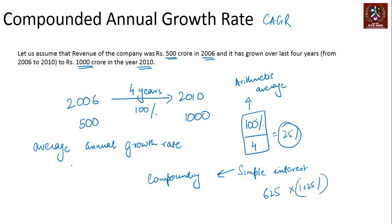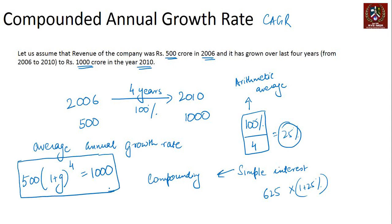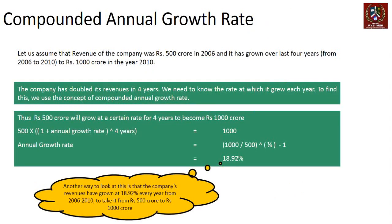What we need to identify is the growth rate at which 500 grows over four years and gives a future value of 1000. The equation we are solving is: 500 into (1 + g) raised to the power 4 equals 1000. We can simplify this to (1 + g)^4 = 1000/500, and then solve for g.